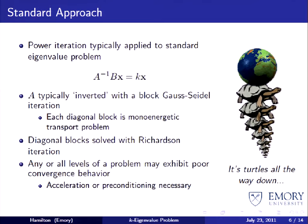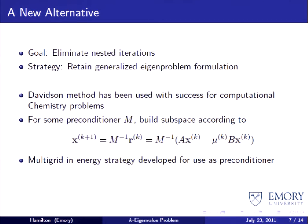Tom Evans at Oak Ridge has a favorite phrase for describing this nested iteration structure: 'turtles all the way down.' When we started studying this problem, we looked at it and said it's this nested iteration structure that's really killing the efficiency of the solvers. We asked whether there is a way to get out of this regime, and concluded that we really need to solve the generalized eigenvalue problem directly — it's the conversion to a standard eigenvalue problem that is really hindering us.